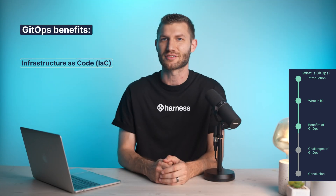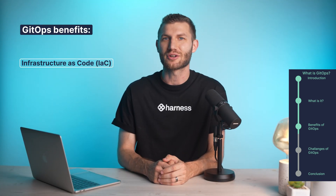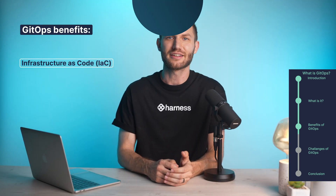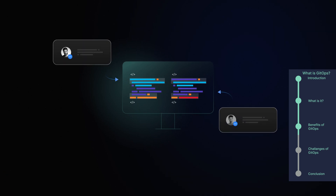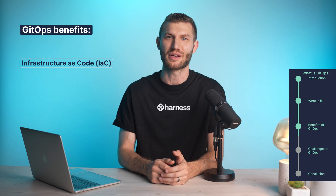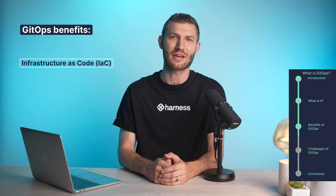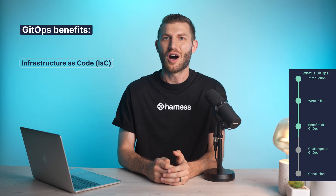Infrastructure as code: by treating configurations as declarative code, GitOps promotes consistency and reproducibility across environments. This reduces the risk of configuration drift and manual errors.